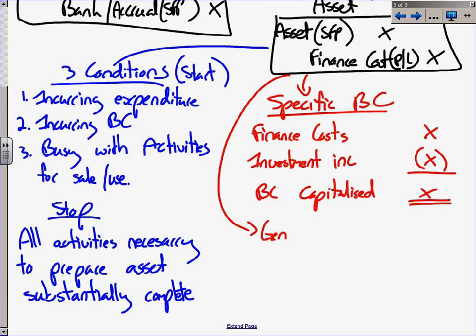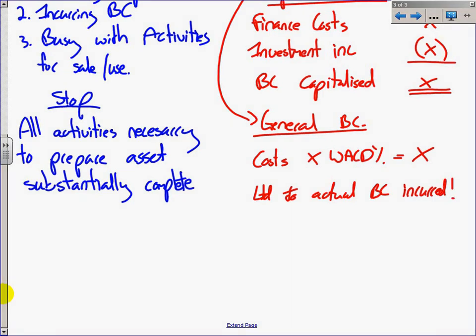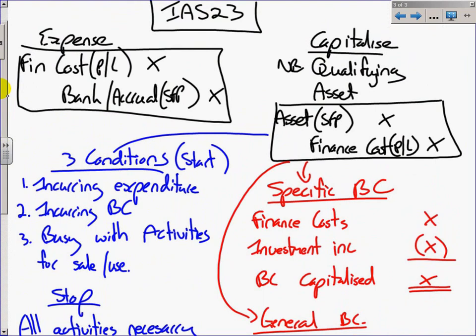Sometimes however you will apply pool accounting or pooling your funds with your general borrowings. They will come from an overdraft or maybe a shareholder's loan, etc. Here you will apply a capitalization rate to the costs incurred, so you look at costs incurred times this capitalization rate, which will be based on the weighted average cost of debt, and that will give you a figure. Now, take note, this must be limited to the actual borrowing costs incurred.